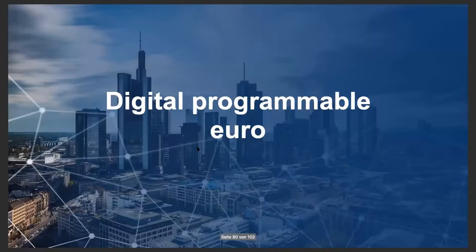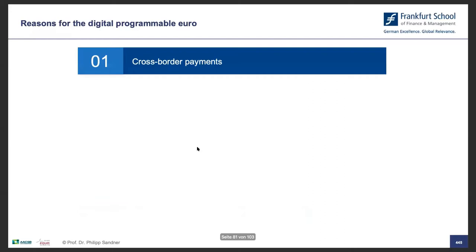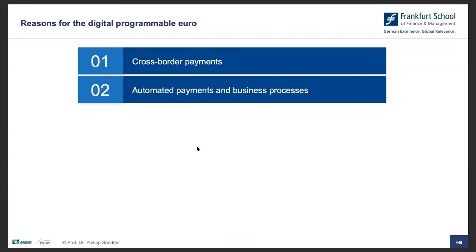Now let's talk about the digital programmable euro — what is it and why do we need it? If we let the euro run on a blockchain-based network, for example in the form of a token, then cross-border payments become much more easily possible. A money transfer from Frankfurt to Argentina can take place within a couple of seconds, end-to-end, without a bank — that's not possible today.